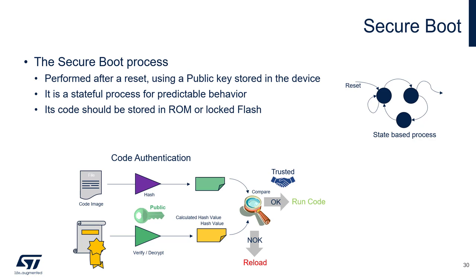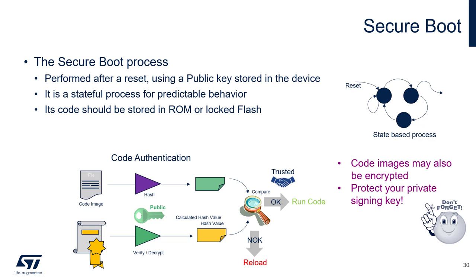The secure boot process is performed after a reset using a public key bound to the device. It is a stateful process for predictable behavior. This authentication process code should be stored in ROM or locked flash, and it may also be performed by the root of trust. The code image being authenticated has to be signed using the code owner's private key. This private key must be kept safe — if exposed, it will allow hackers to sign their own boot code. Code images may also be encrypted. Protect your private signing key.